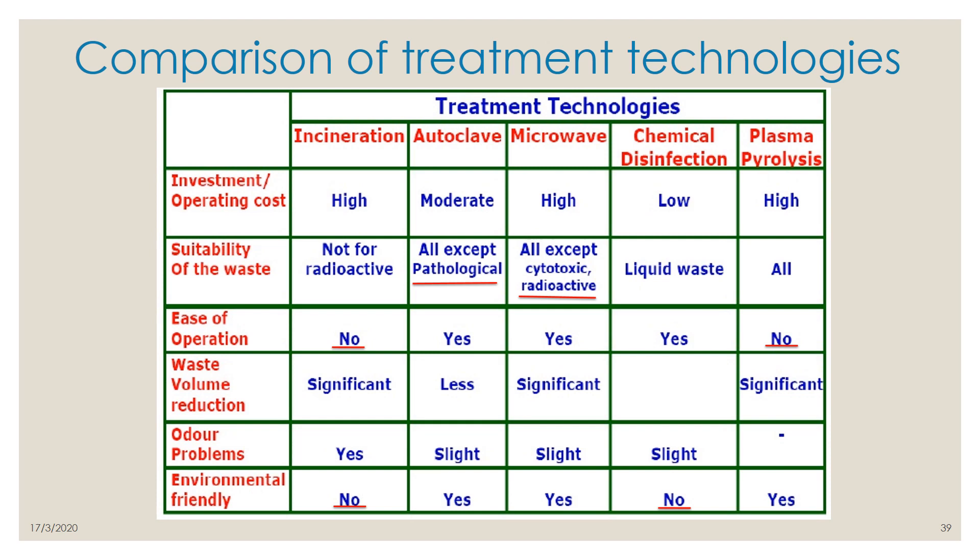Comparing treatment technologies: incineration, autoclaving, microwaving, chemical disinfection, and plasma pyrolysis. Students should research which method is best. Operating costs: incineration is high, autoclaving is moderate, microwave is very high, chemical disinfection is low, and plasma pyrolysis is high.